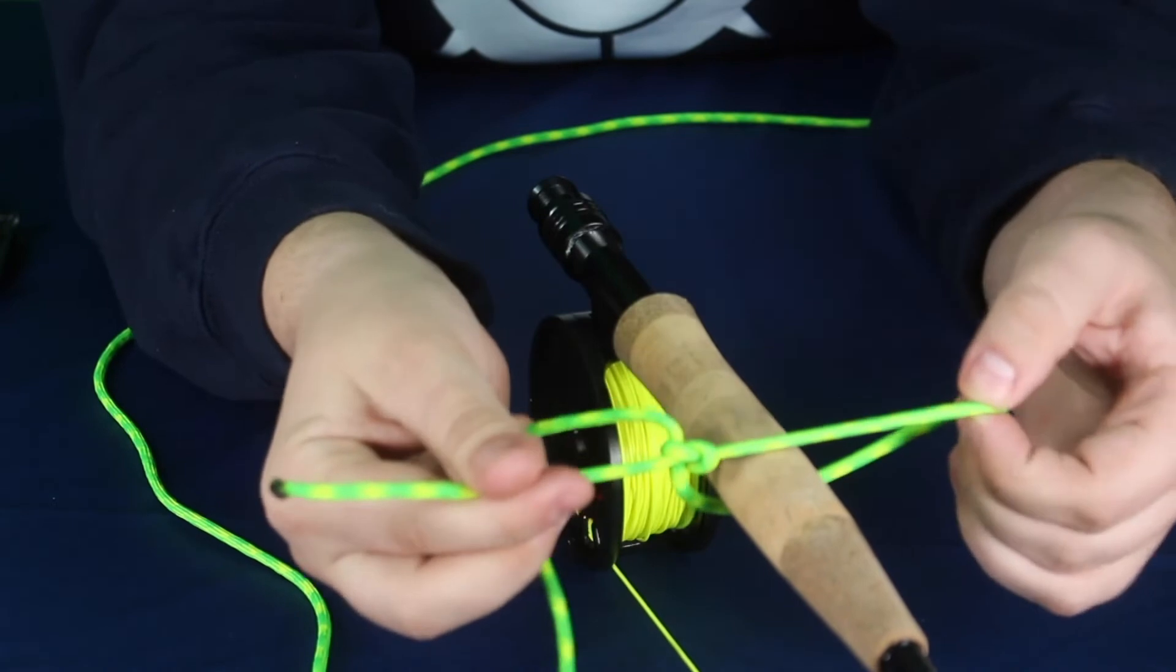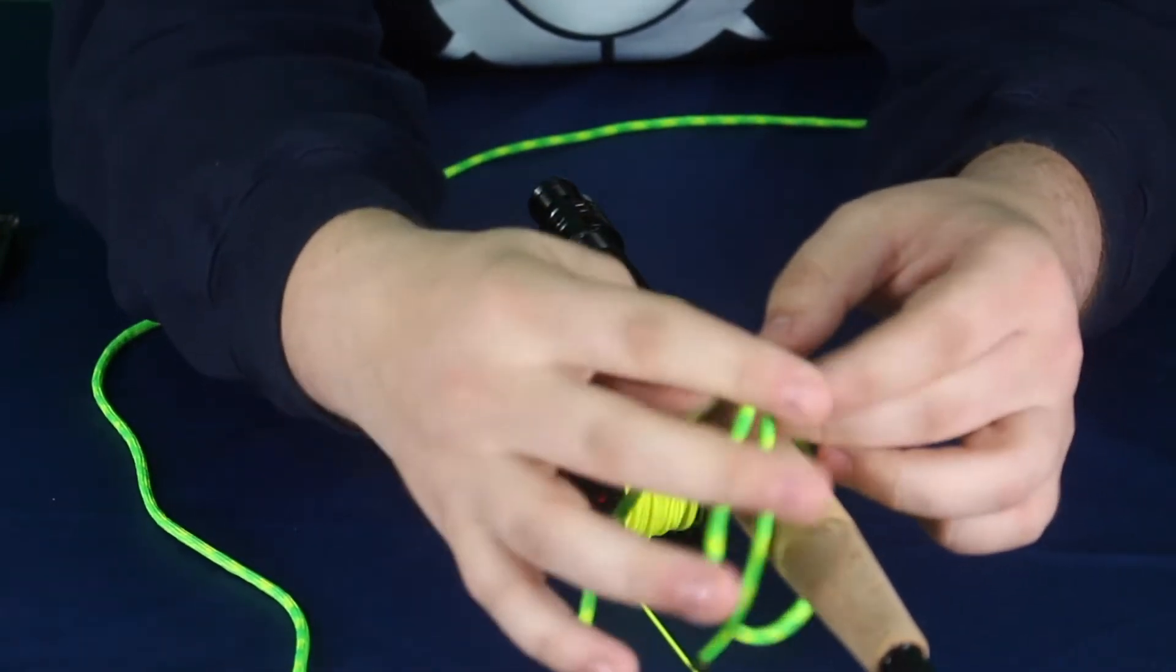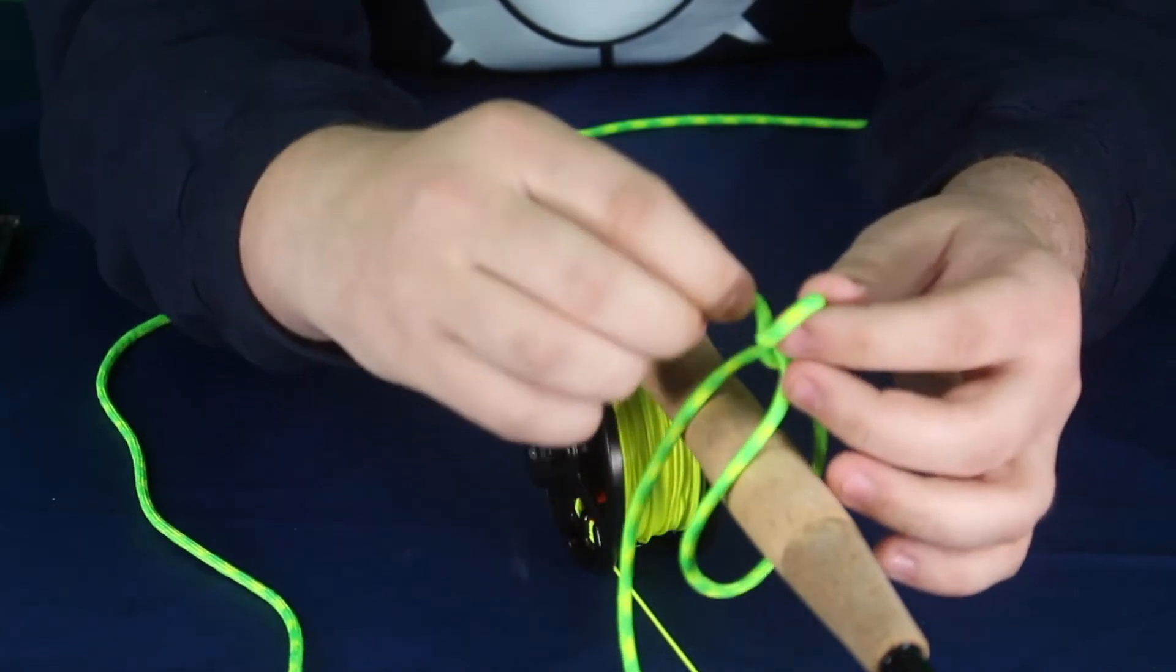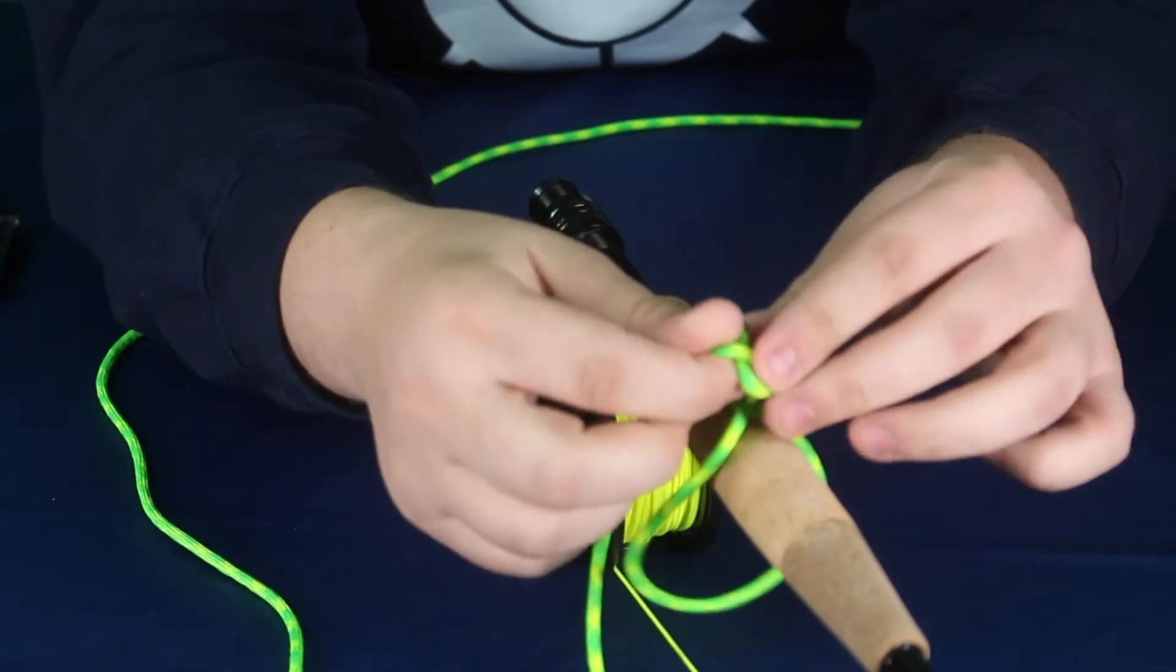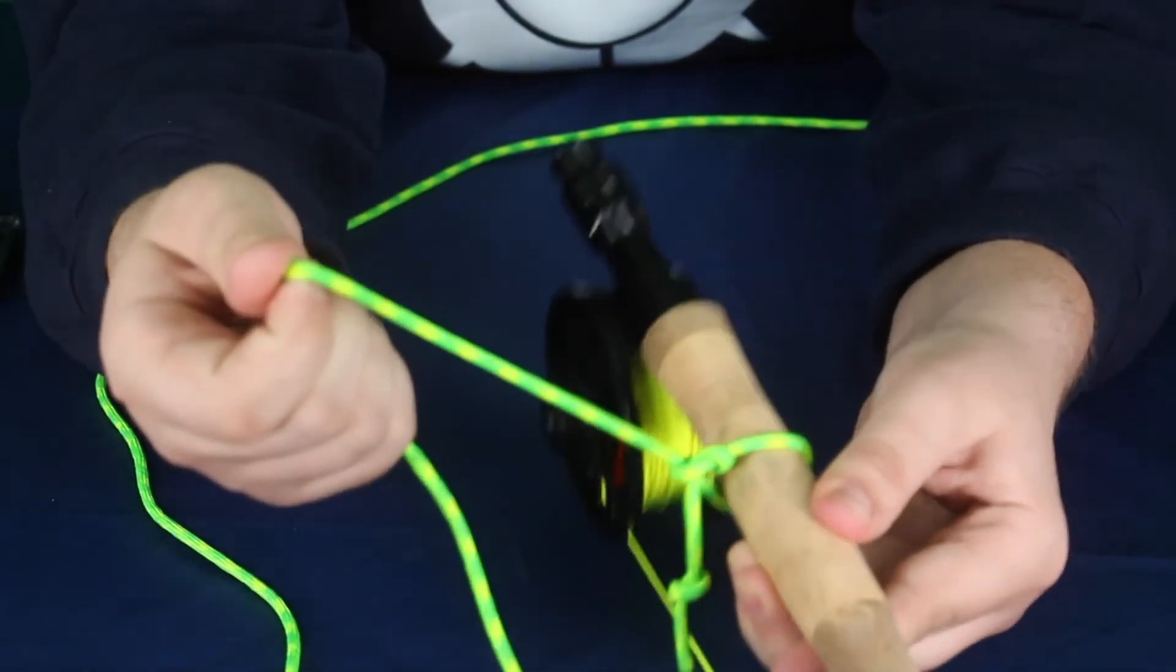Pull that knot tight and this end of the line should be able to move freely through it. Now to stop it from coming undone, we're going to go ahead and tie a quick stopper knot. When it's all said and done, pull it tight and there you go.